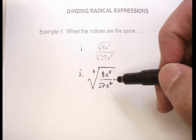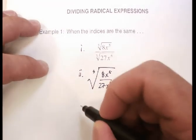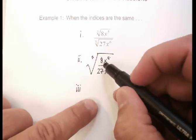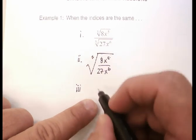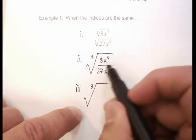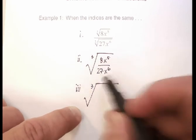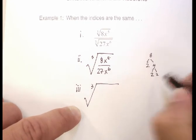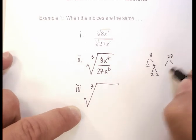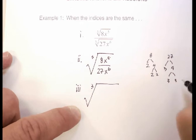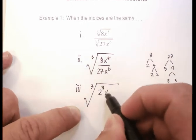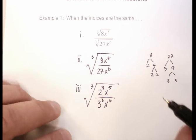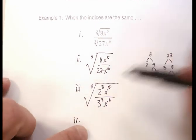By doing that, I'm going to simplify the fraction underneath first and then simplify the overall radical. At this step I'm going to prime factor the 8 and the 27. Remember that 8 is 2 times 2 times 2, and 27 is 3 times 3 times 3. So I can rewrite this as 2 cubed times x to the fifth over 3 cubed times x to the sixth.